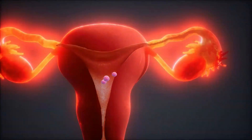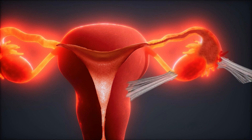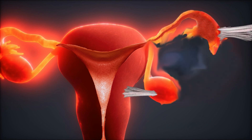Both chlamydia and gonorrhea can also enter the abdomen from the fallopian tubes and cause scar tissue there. Scar tissue can also make it more difficult to become pregnant if it interferes with the ability of the fallopian tube to capture an egg at the time of ovulation.